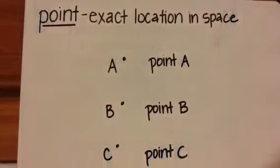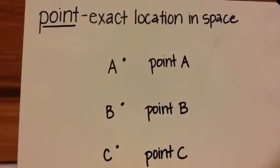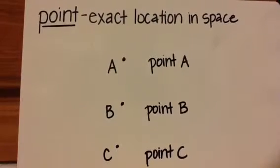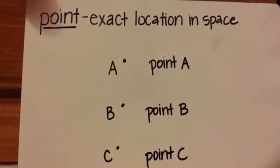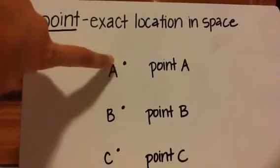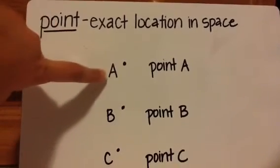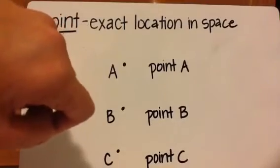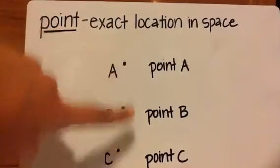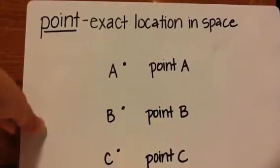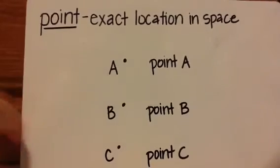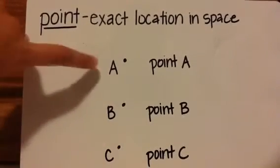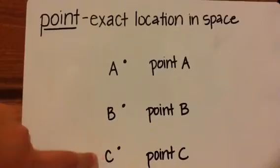The first thing we're going to learn about is a point, and it's basically exactly what it sounds like — it is an exact location in space. So if you have something like this and you put an A by it, you call it point A. If you have many points, you put a letter by each one so you can say point A, point B, point C.